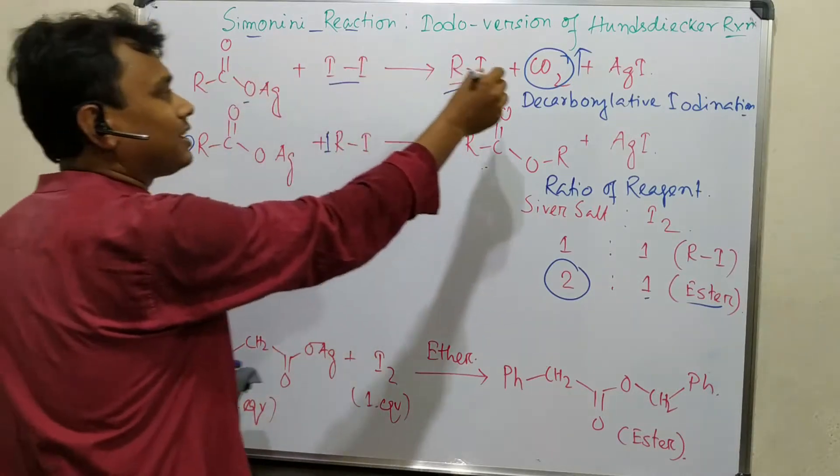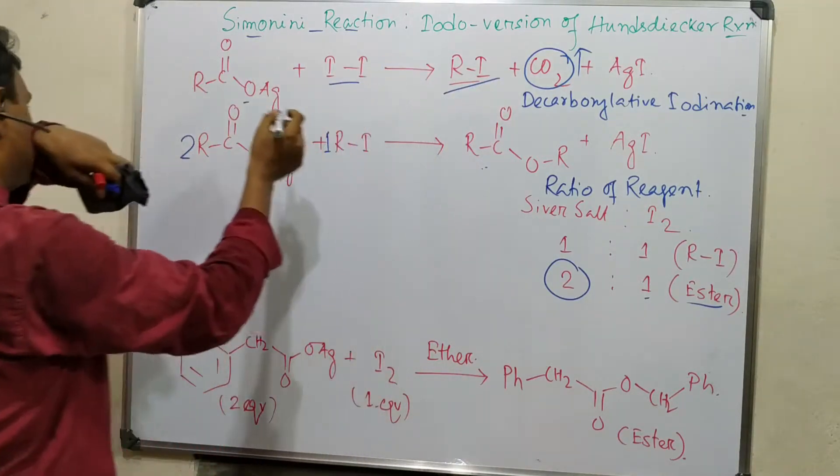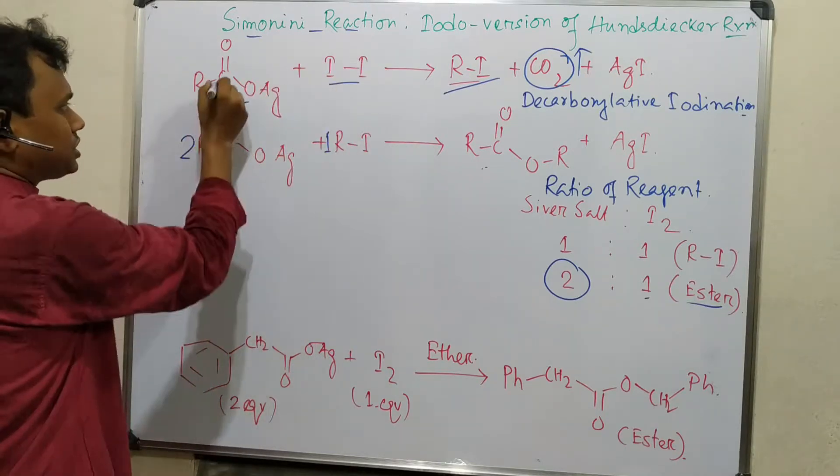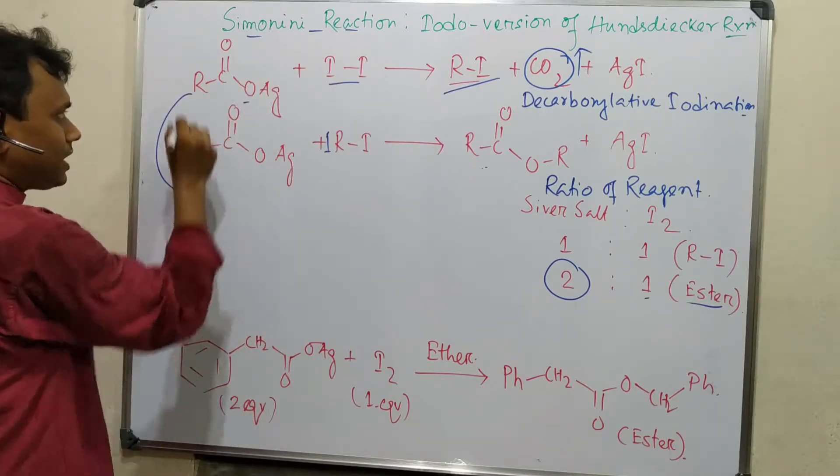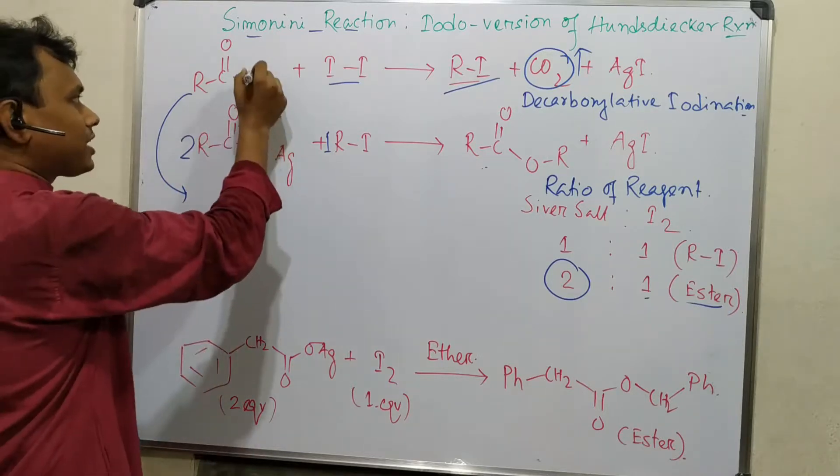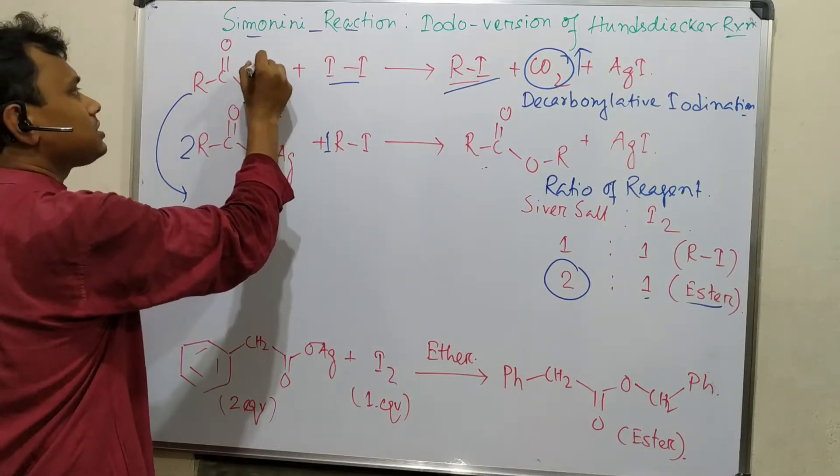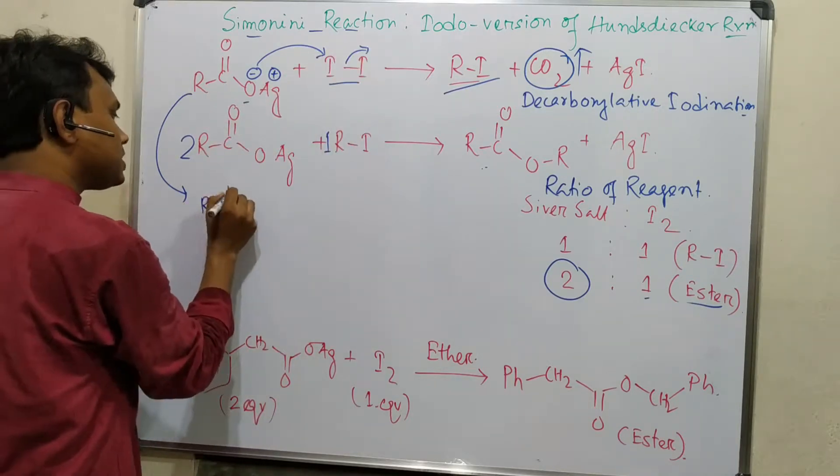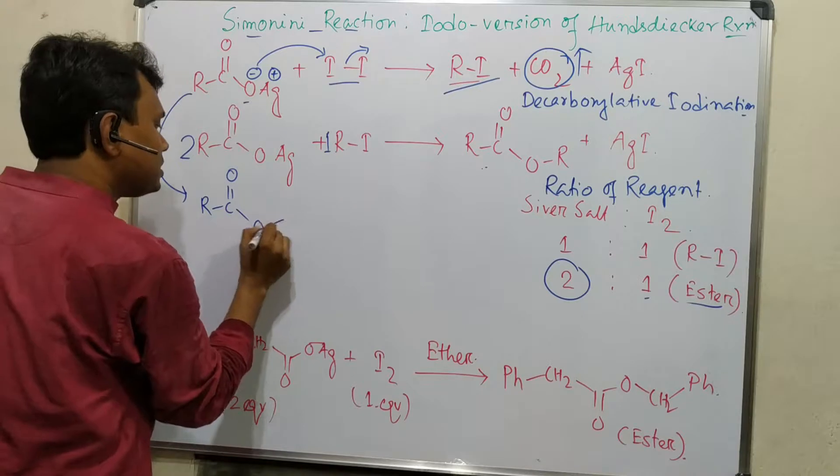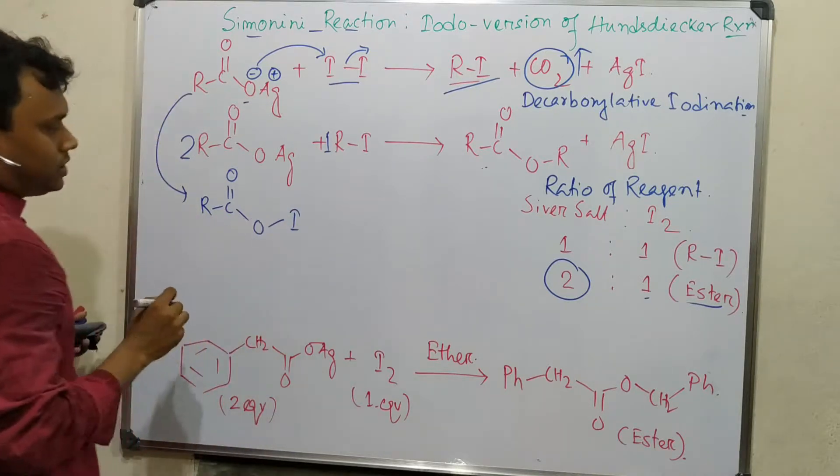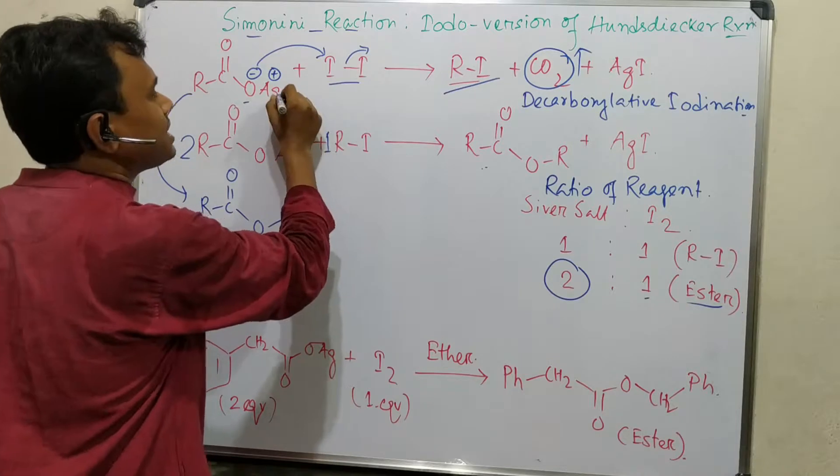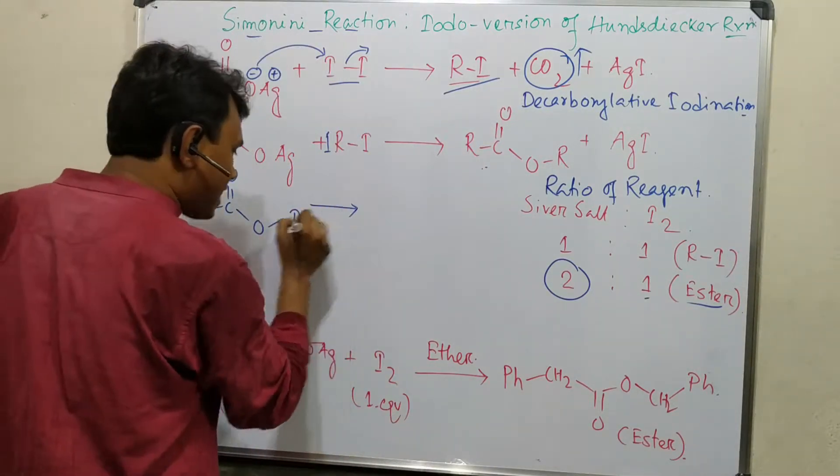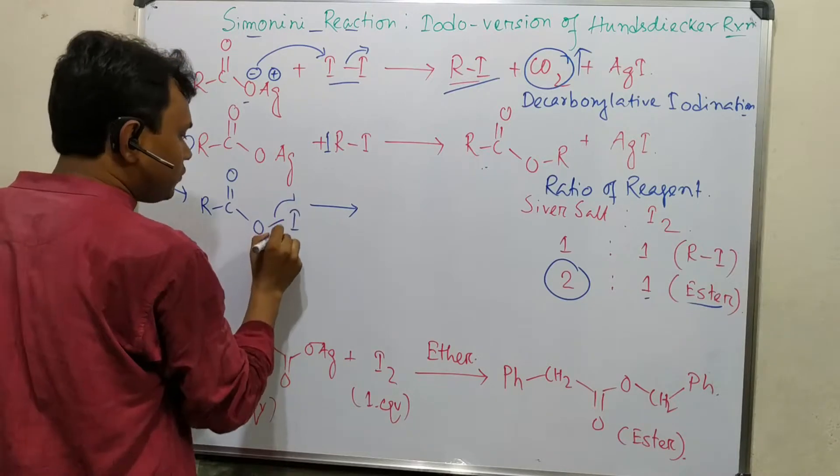Let me discuss the mechanism. Under thermal conditions, the silver salt of carboxylic acid reacts because the carboxylate anion attacks iodine. What does it produce? It produces acyl iodide and silver iodide which is separated out from the reaction medium.